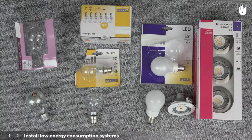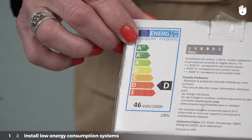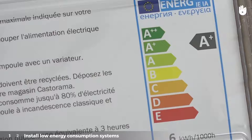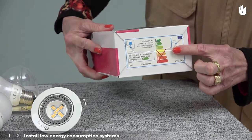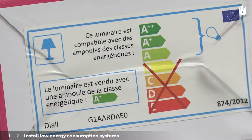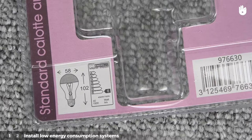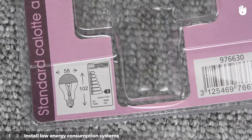On new equipment, an energy consumption label will specify the energy consumption performance. Favor equipment that uses the least amount of energy possible. Energy consumption and efficiency is ranked with A for the most efficient and E for the least efficient.